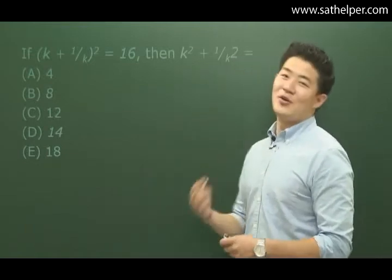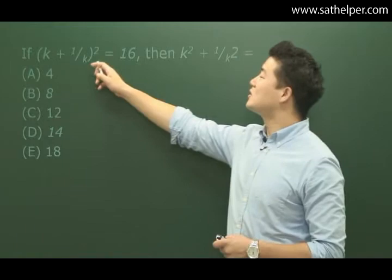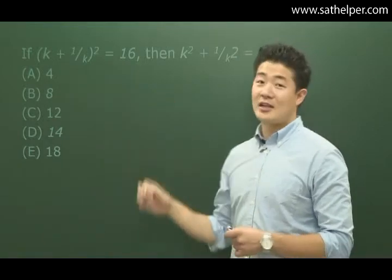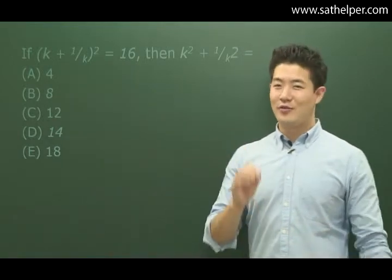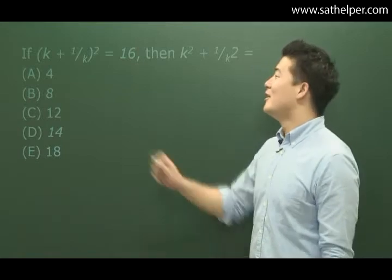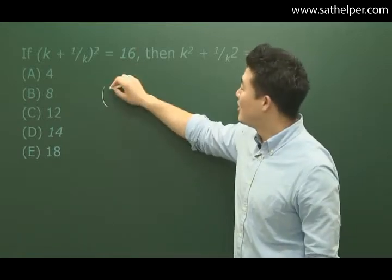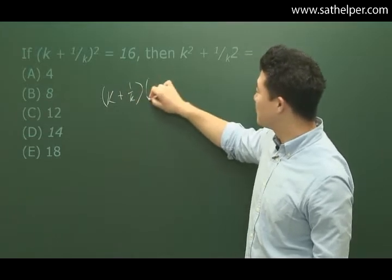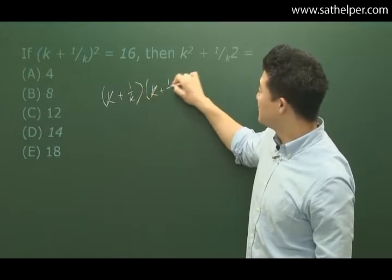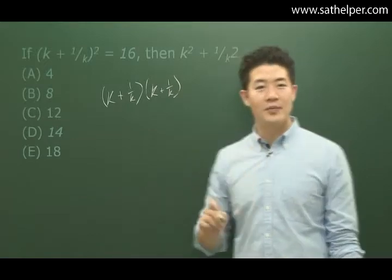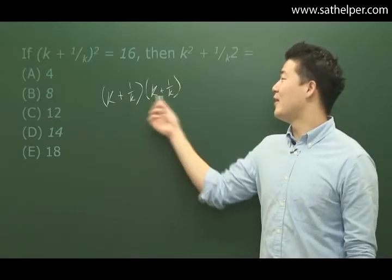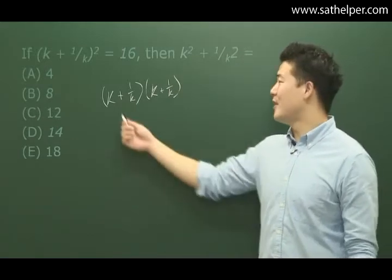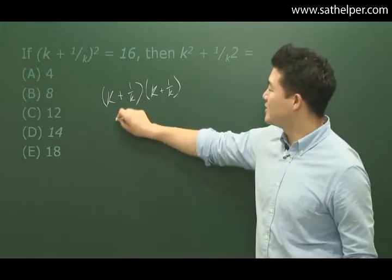One thing we need to notice is that when we have (k + 1/k)², we can expand it. From the last lecture, we learned that something squared is the same as multiplying it by itself. It adds a twist when we have a fraction, but it's no different. When we FOIL it, we get k².